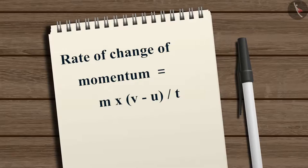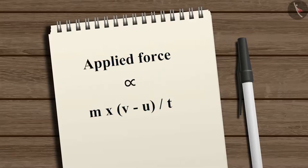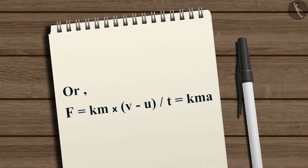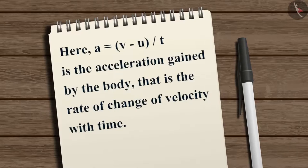The rate of change of momentum will be equal to m multiplied by (v minus u) divided by t. That is, the applied force is proportional to m(v minus u)/t. So F equals K multiplied by m multiplied by (v minus u) divided by t, which can be written as K multiplied by m multiplied by a. Here, a equals (v minus u) divided by t is the acceleration gained by the body, that is, the rate of change of velocity with time. The quantity K is a constant of proportionality.